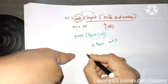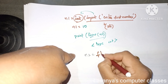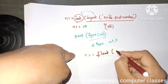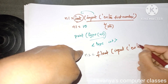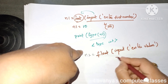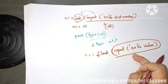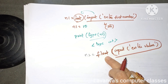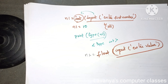Similarly, for float: n2 = float(input('Enter value')). Whatever value is entered is accepted as a string and then converted into float. This is the use of the input function in Python. Thank you for watching. If you like this video, please subscribe to my channel.